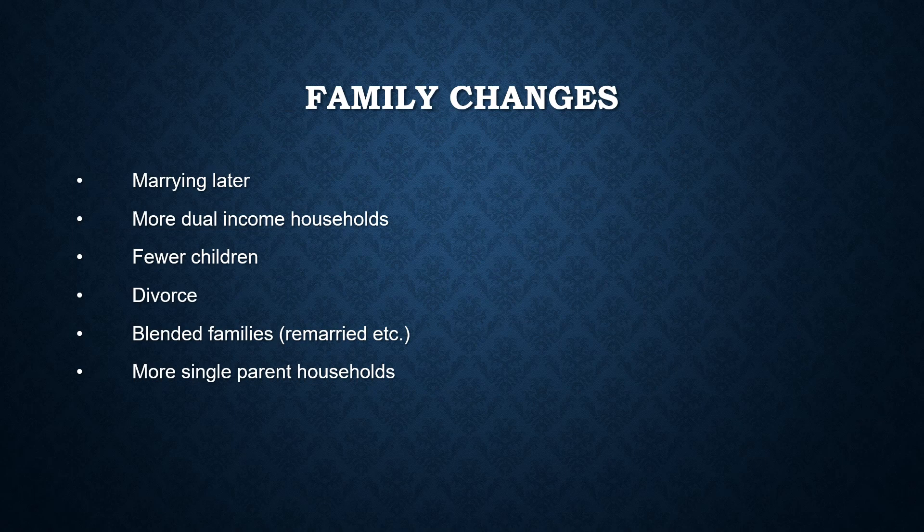In terms of demographics, there are a number of family changes. We find that in many cases people are getting married later. They have more dual-income households. Many of these folks are called DINKs — people with dual incomes and no kids. We see that families now in the U.S. are having fewer children, and the divorce rate in the U.S., while it has leveled out over the last few years, continues to be very high. This results in things like blended families and more single-parent households — all things that marketers need to be concerned about.